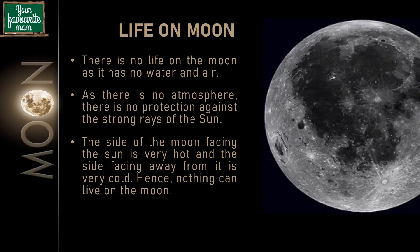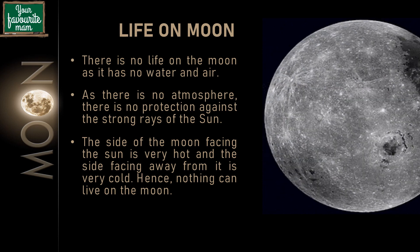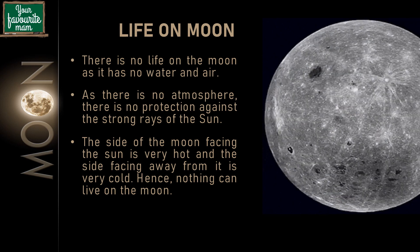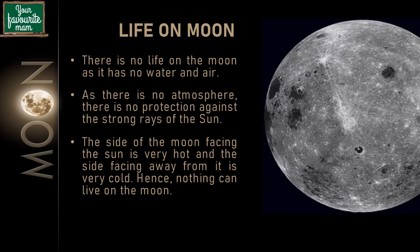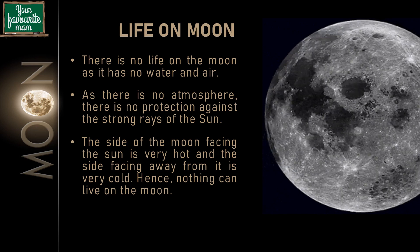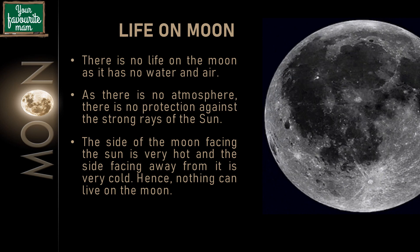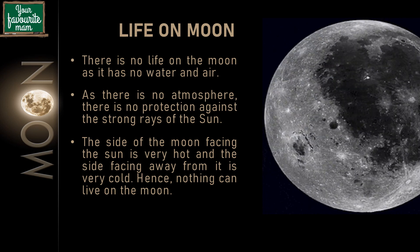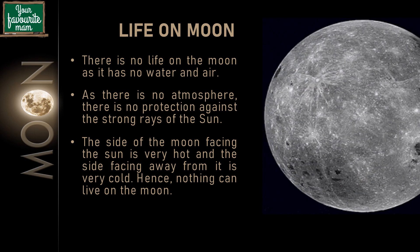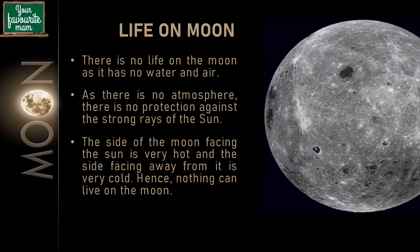For any life to survive, we need the minimum of two things: air and water. As the moon has no air and water, there is no life on the moon. Also, since there is no atmosphere, there is no protection against the strong rays of the sun. So the side of the moon facing the sun is very hot and the side facing away from it is very cold. Hence, nothing can live on the moon as the living conditions are uninhabitable.